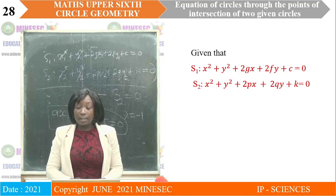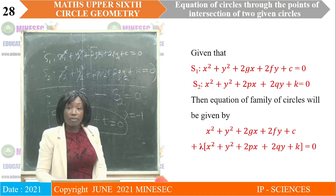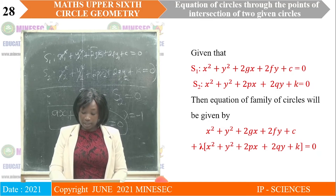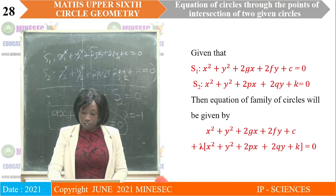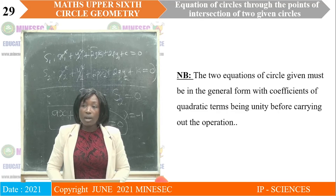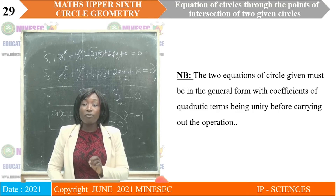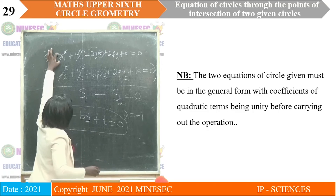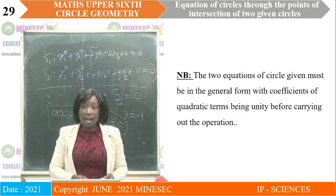So the equation of the family of circles is: write the first equation, plus λ times the second equation, equal to 0. Important note: the two equations of the circles given must be in general form with the coefficients of the quadratic terms being unity (equal to 1) before carrying out the operation.